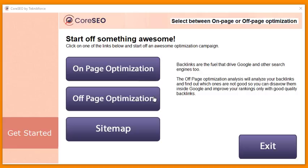The second thing is off-page optimization, and this is something totally unique — no other software actually does this sort of thing. It will go out to the web, look at all your backlinks, look at the domains that are backlinking to you, and tell you exactly which ones are good and which ones are bad. The bad backlinks pointing to you are dragging your rankings down. You need to disavow them and get more backlinks from higher-quality websites. This tells you exactly which backlinks and domains are good or bad.